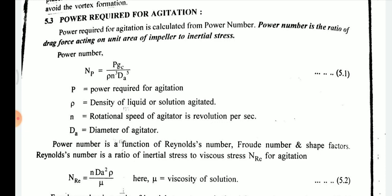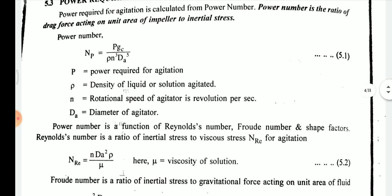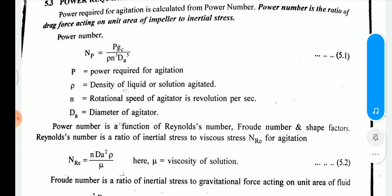The power number NP is given by P·gc / (ρ·n³·da⁵), where P is the power required for agitation, ρ is the density of the liquid or solution to be agitated, n is the rotational speed of the agitator in revolutions per second, and da is the diameter of the agitator.